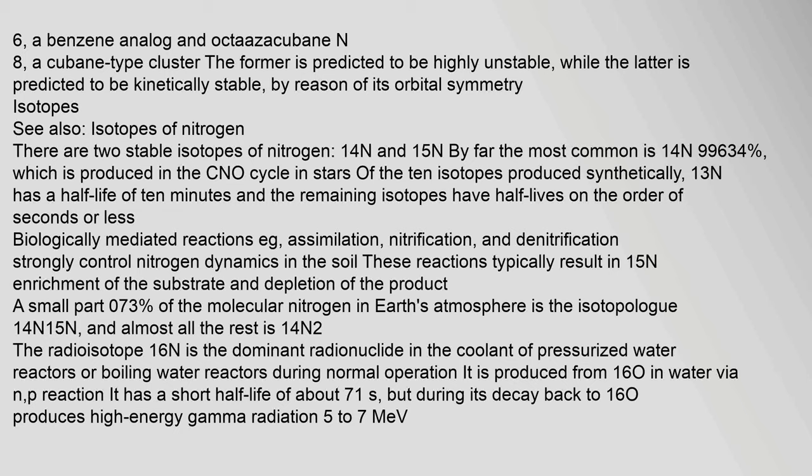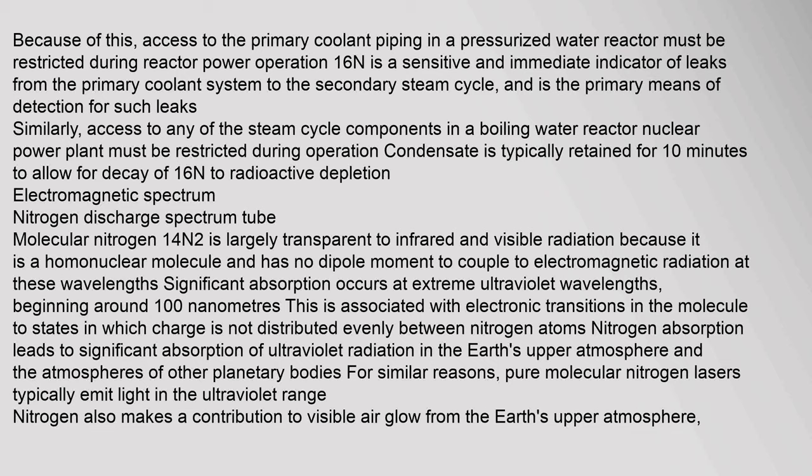There are two stable isotopes of nitrogen: 14N and 15N. By far the most common is 14N (99.634%), which is produced in the CNO cycle in stars. Of the 10 isotopes produced synthetically, 13N has a half-life of 10 minutes and the remaining isotopes have half-lives on the order of seconds or less. Biologically mediated reactions such as assimilation, nitrification, and denitrification strongly control nitrogen dynamics in the soil. The radioisotope 16N is the dominant radionuclide in the coolant of pressurized water reactors or boiling water reactors, produced from 16O in water via an N-P reaction. It has a short half-life of about 7.1 seconds, but during its decay back to 16O produces high-energy gamma radiation of 5 to 7 MeV.